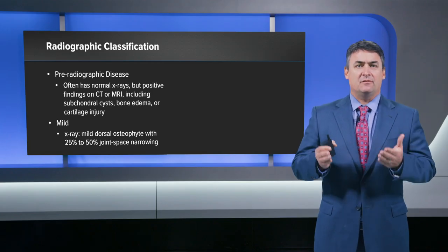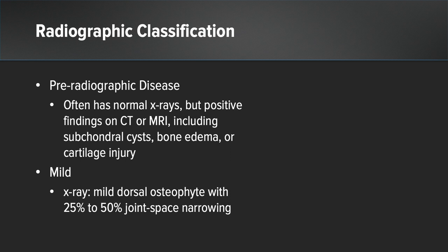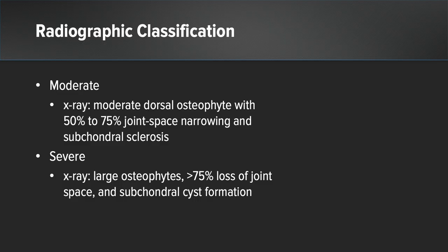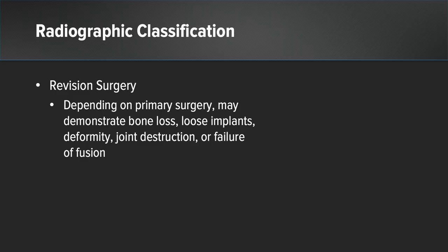Regarding radiographic classification, pre-radiographic disease shows normal x-rays but positive findings on CT or MRI — subchondral cysts, bone edema, or cartilage injury. Mild disease shows a mild dorsal osteophyte with about 25 to 50 percent joint space narrowing. Moderate disease shows larger dorsal osteophytes and 50 to 75 percent joint space narrowing with subchondral sclerosis. Severe disease shows a very large osteophyte, greater than 75 percent joint space loss, and larger subchondral cyst formation. Revision surgery radiographically may demonstrate bone loss, loose implant, deformity, joint destruction, or nonunion.